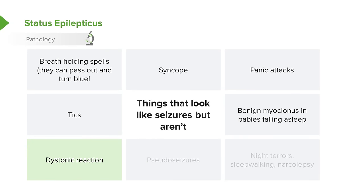Dystonic reaction is an unusual side effect to certain medications — for example, Reglan or some medicines for nausea. The dystonic reaction is a sudden spasm of the muscles that's relieved by IV Benadryl. It really is not a seizure. Patients may fake seizures out of a desire for attention, or they may be so stressed that their body is seizing even without true seizures. We call these pseudo-seizures, and they're very common in adolescence.